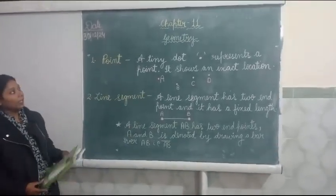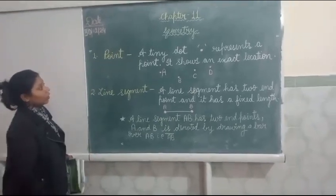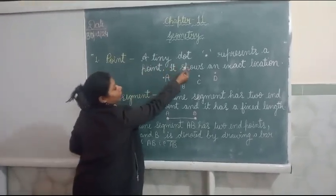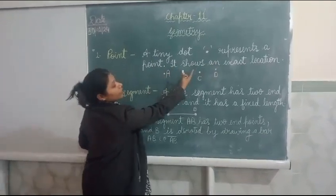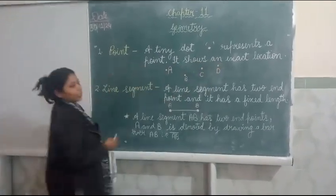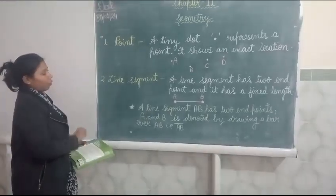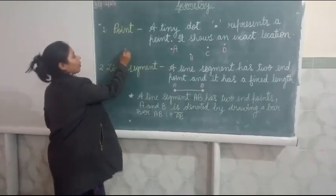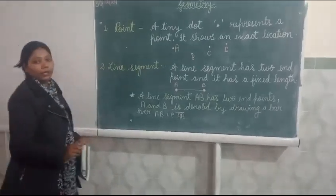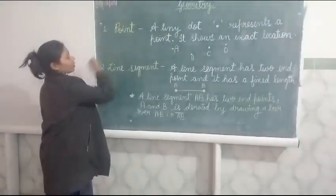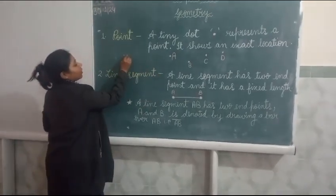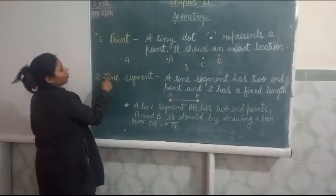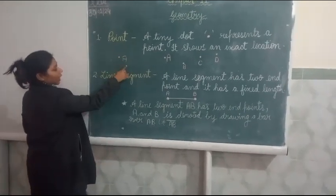The first topic in your chapter is point. What is point? A tiny dot represents a point. It shows an exact location. If you draw any single point on any page or board or anything, it is called a point. When we give a name to the point, it is called the name of the point. What is the name of point? Point A.